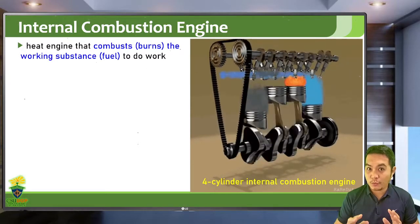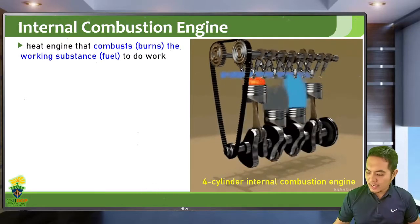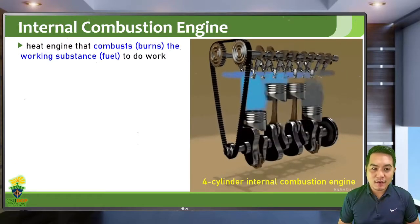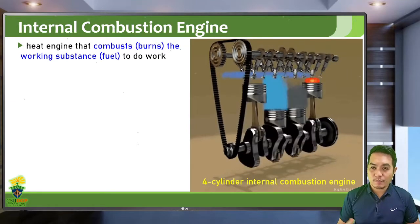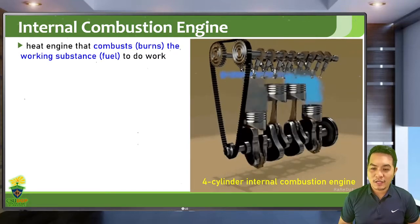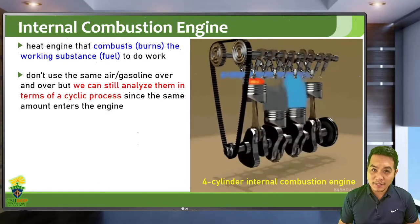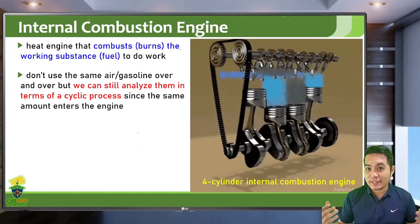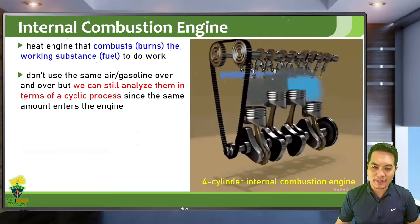This is a simulation of a four-cylinder internal combustion engine. The cylinders are shown open so you can see what happens inside each cylinder. The pistons produce rotations, which are connected to the mechanisms of an automobile — converting the rotation of the pistons to the rotation of the wheels. In an internal combustion engine they don't use the same air or gasoline over and over again, but we can still analyze them in terms of a cyclic process since the same amount of fuel and air mixture enters the engine every cycle.